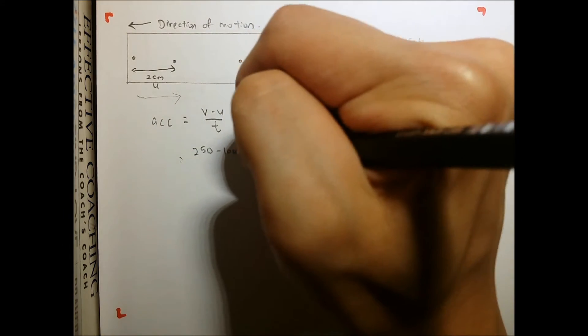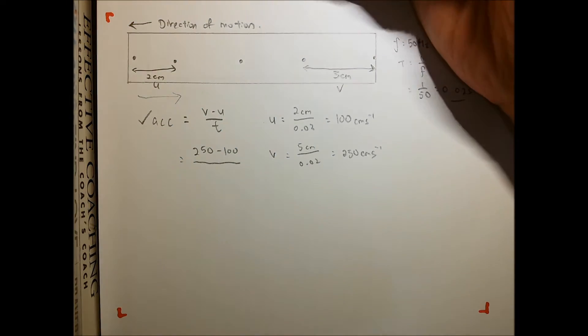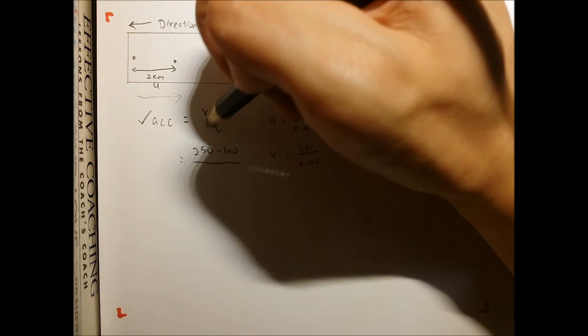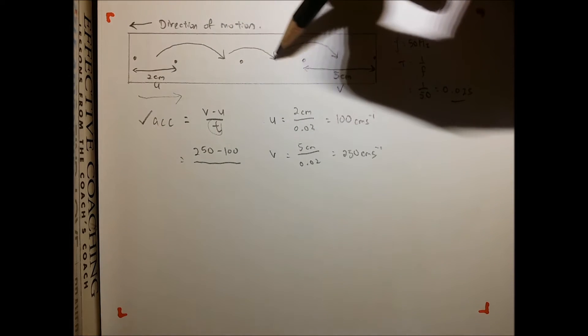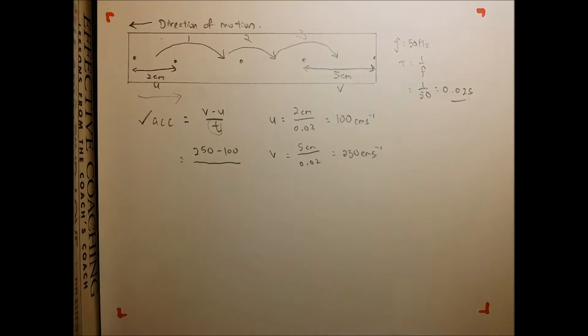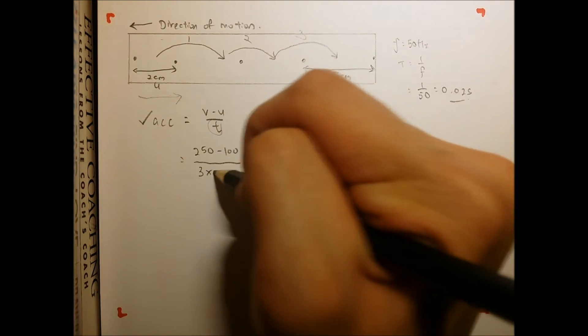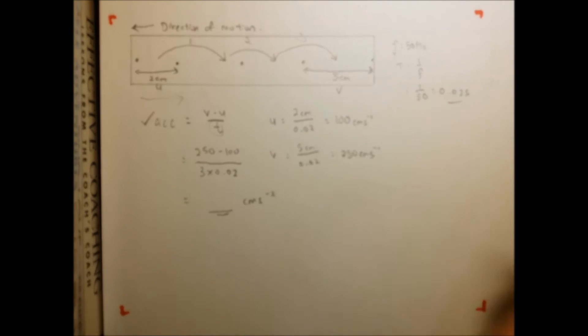Substituting: 250 minus 100 divided by the time taken. When calculating the time taken for acceleration in ticker tape, we always count jumps — only for acceleration time. That's jump 1, jump 2, and jump 3, going from this middle section to the next middle section. Three jumps means 3 times 0.02, giving a final answer in cm/s² of negative 2.